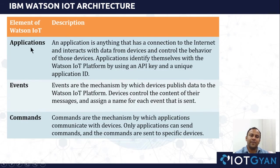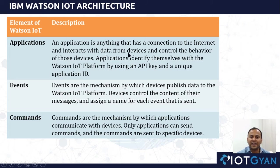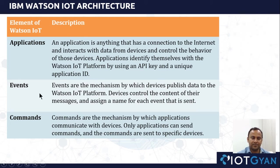Next is application. An application is anything that has a connection to the internet and can talk to devices — it can receive data from devices and trigger some action on those devices. For any application, it has a unique application ID as well as an API key which is stored in the cloud.